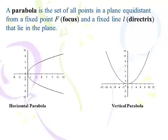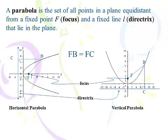I have here a horizontal parabola and a vertical parabola, and we're going to define these points as we move along. I picked an arbitrary point on each of these and showed you where the focus is. I picked a point B on each curve, and the distance from F to B — from the focus to B — is exactly the same as the distance from B to C, there to the directrix. So that's the definition of a parabola: the collection of points in a plane that are all equal distance from a fixed point F and a fixed line L.